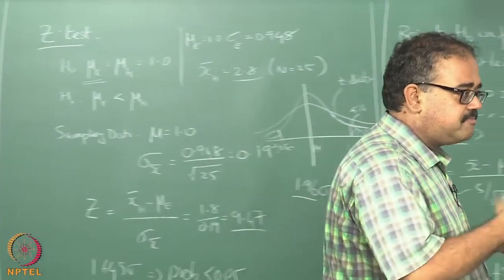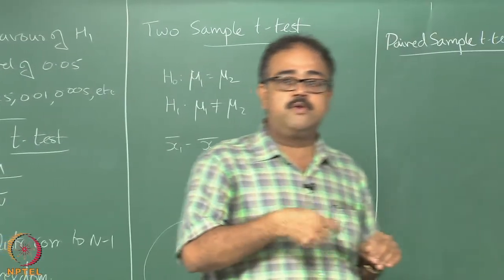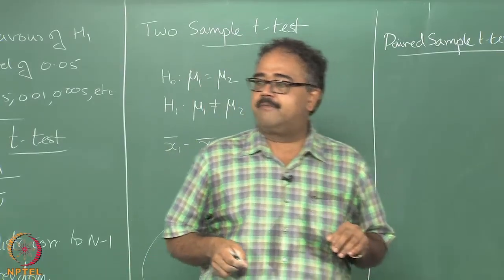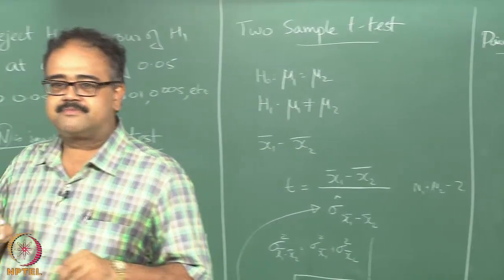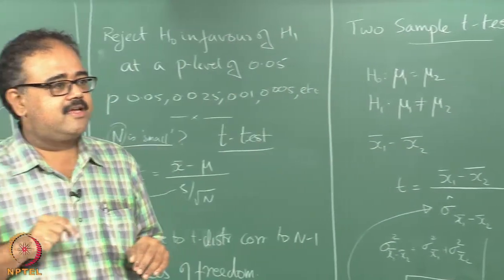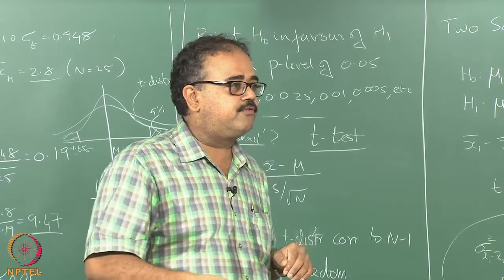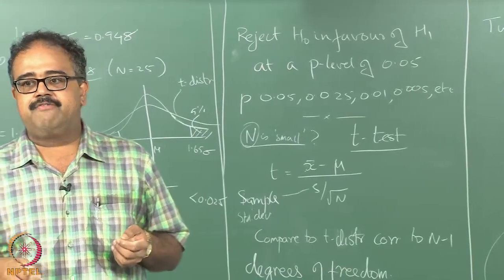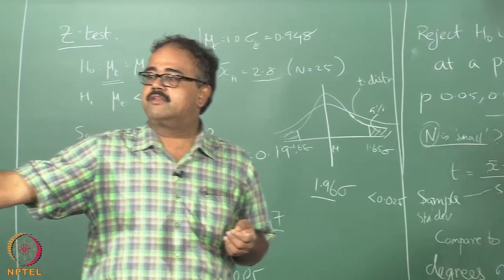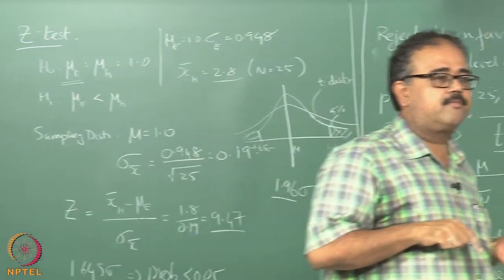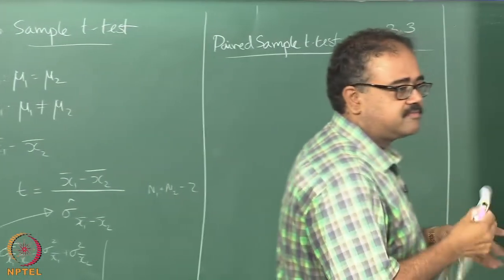This is catching on in the machine learning community — for many newer datasets being published, people are actually publishing the folds on which they ran the experiments, so that you can also run them on the same folds. You do not generate your own new folds; you use the same folds they ran experiments on. Therefore you do not have to repeat their numbers — you can directly compare and report.